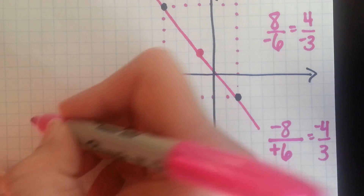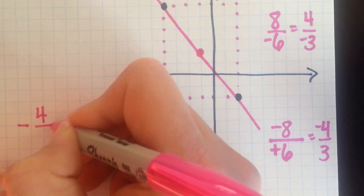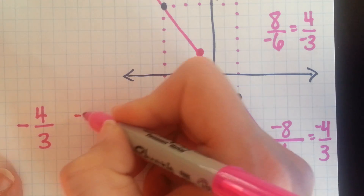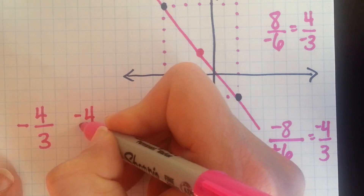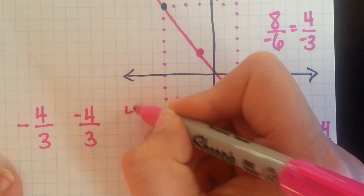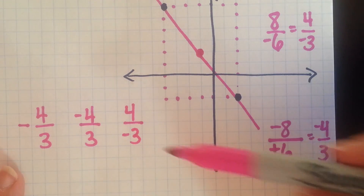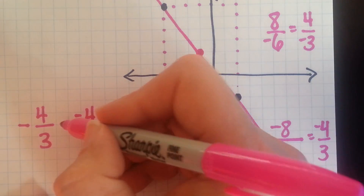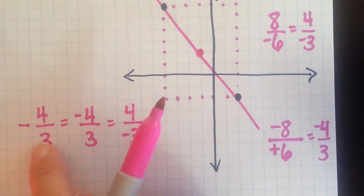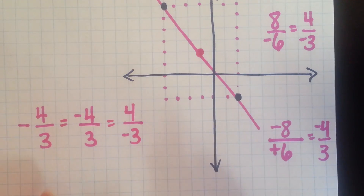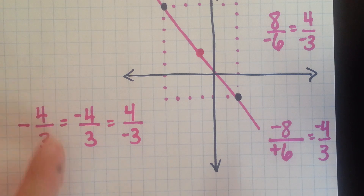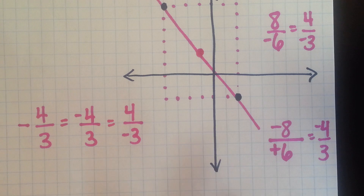One thing we need to remember is that negative four over three — that negative can go with the top number or with the bottom number. So it can be with the numerator or the denominator, and it still all means the same thing, even if it's written out front. You just choose which one you're going to put it with. Notice that just because it's negative doesn't mean you make both numbers negative. You only make one of them negative. If they were both negative, they would cancel out to make a positive.